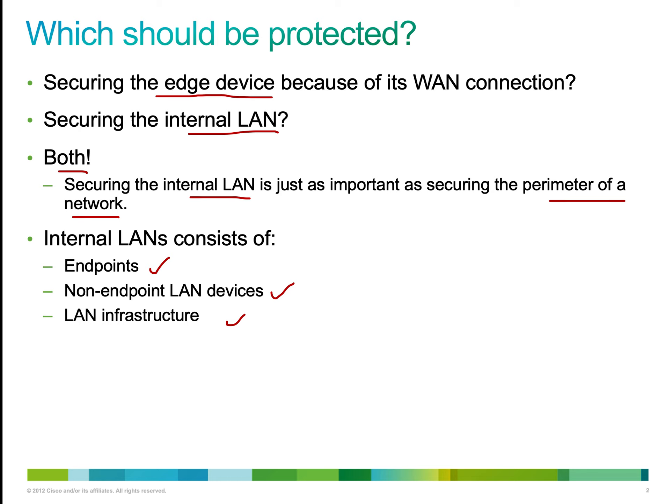Now let's take a look at what should be protected in a network. First, we need to secure the edge devices that are connected to the WAN. The LAN is connected to the WAN, so all edge devices like the router and the switch need to be secured. We also need to secure the internal local area network.